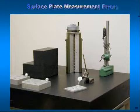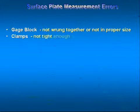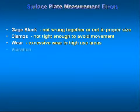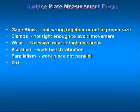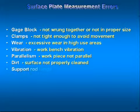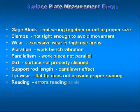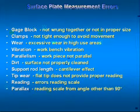Surface plate measurement errors. Some errors that can happen when using a surface plate include: gauge blocks that are not wrung together or not in proper size, clamps that are not tight enough to avoid part movement, excessive wear in high use areas, vibration from the work bench, parallelism where a work piece is not parallel, the surface of the plate is not clean, support rod length has a cantilevered effect, tip wear where a flat tip does not provide proper reading, errors with reading the scale, and parallax errors where a reading is taken from an angle other than 90 degrees.